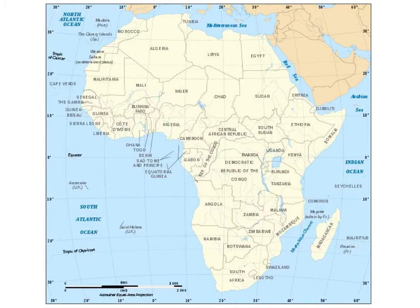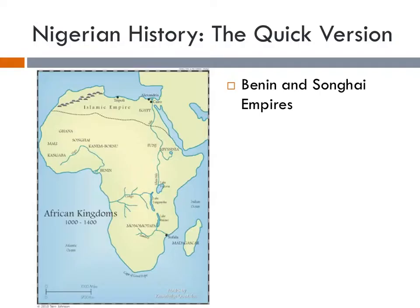It's worth noting that there are a number of rivers running through Nigeria, which actually encouraged the tribal dependency on agriculture. The yam, or what you might know as the sweet potato, is actually a staple crop in Nigeria, and it features prominently in the novel Things Fall Apart.